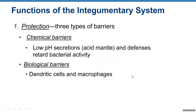Function number one: protection. Your skin provides protection. The integumentary system is a body system. Skin is the organ of this system, and because skin is pretty much the only one large organ, most functions relate to your skin more than to other accessory organs of the integumentary system. When I tell you your skin does something, that also means your integumentary system does that.